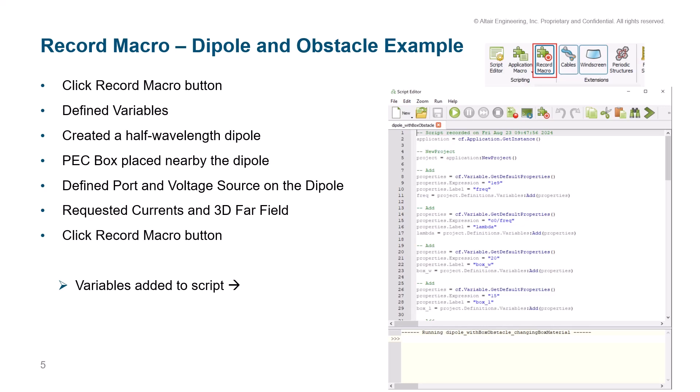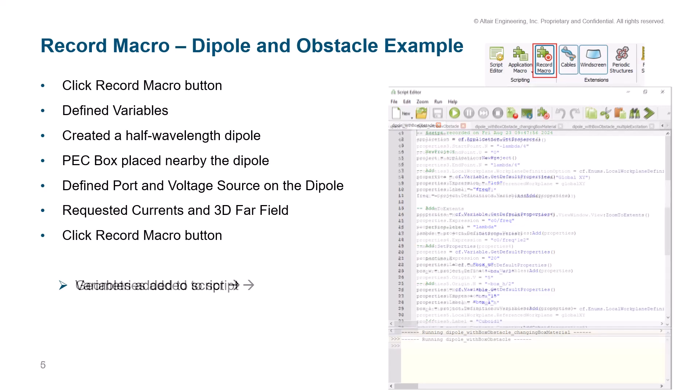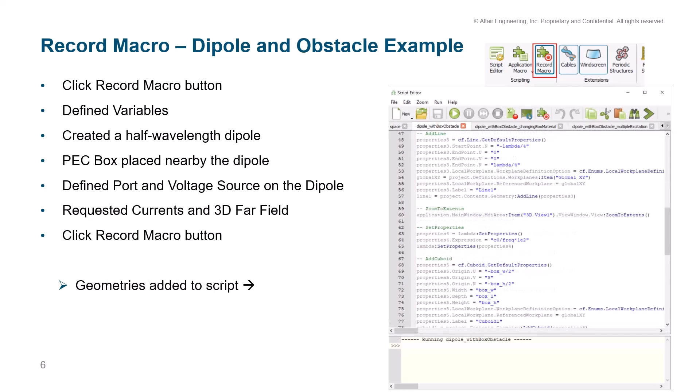We also have frequency, wavelength, and the different box dimensions defined. The next portion of the script is the geometry — at the top is the 'add line' where the dipole is created, with the start point vector at negative lambda divided by four and the endpoint vector at lambda divided by four. You can modify which work plane the dipole is in — currently the XY work plane. At the bottom, the cuboid geometry is defined with the box variables. In the middle, there's a view zoom to extents command, so you can change what the view looks like in the FICO GUI when you run the code.